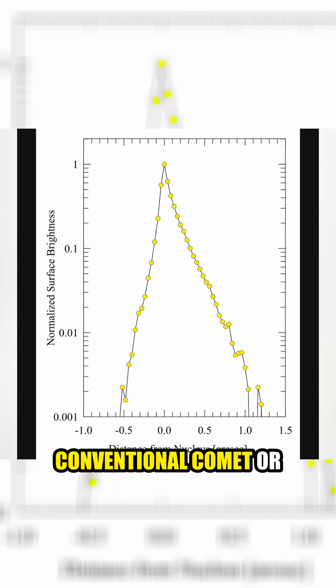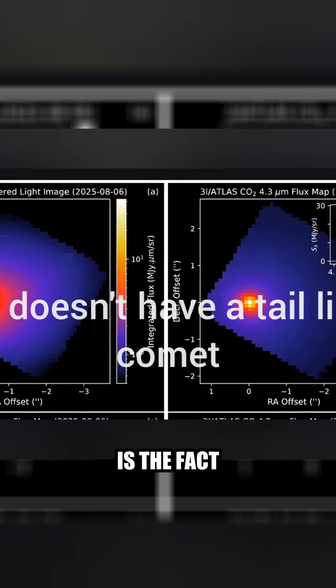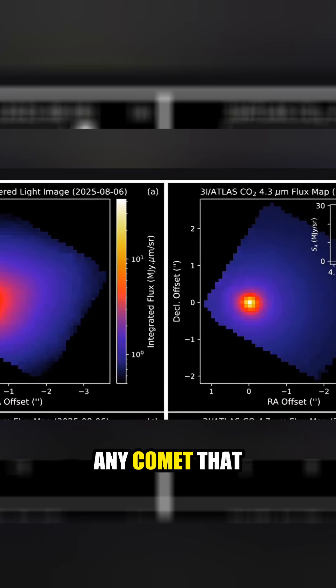3I Atlas doesn't resemble a conventional comet or any comet at all. Associated with this appearance is the fact that 3I Atlas doesn't have a tail like any comet that we have ever seen.